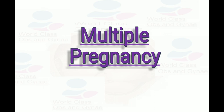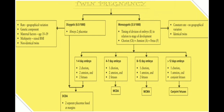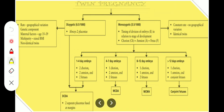The first thing is about zygosity. Twin pregnancy is divided into two main types: the monozygotic and dizygotic type. For monozygotic twins, the incidence is 3.5 per 1000, and the timing of division of the embryo in relation to the stage of development needs to be discussed.